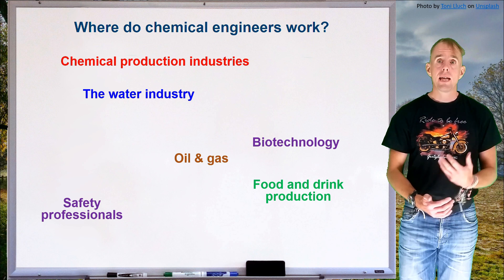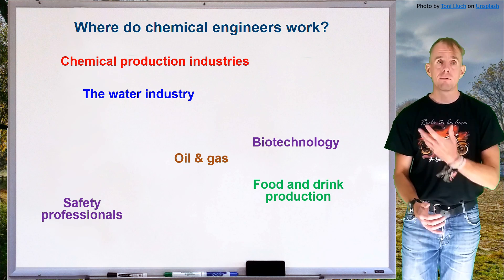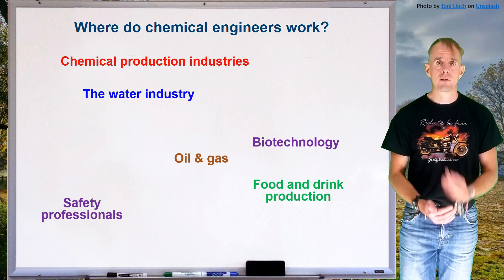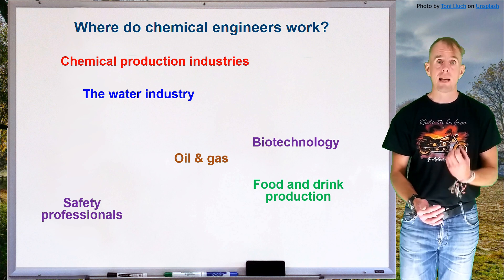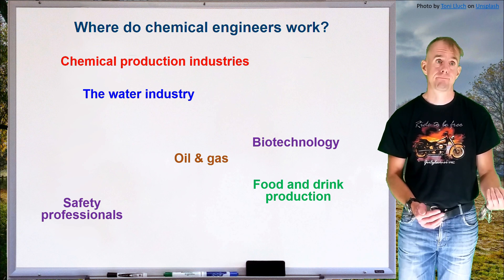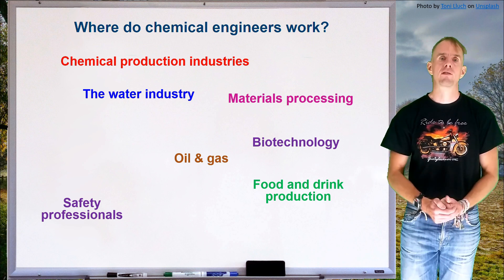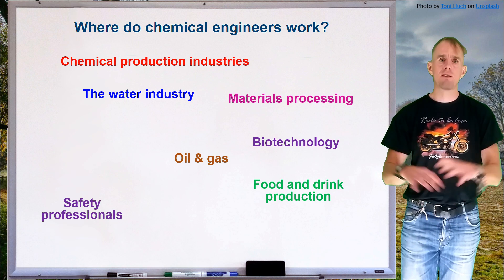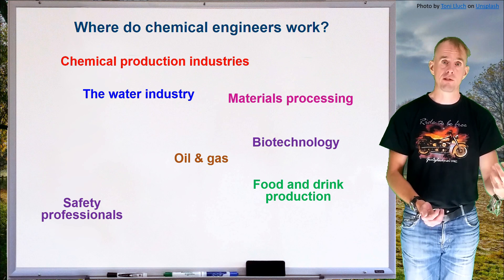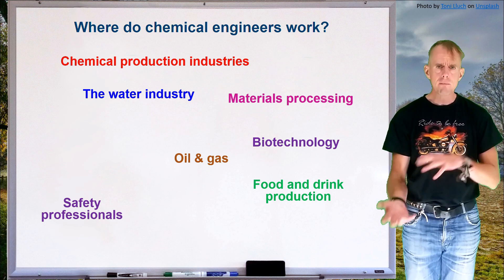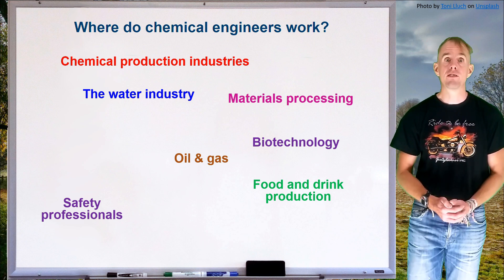Oil and gas is a traditional topic still with us today and will be for some decades yet. As well as providing energy, oil and gas provide the process industries with vital raw materials — so we can achieve net zero while still using oil or gas as a raw material to make products from, rather than burning it. Materials processing is also a very important part of chemical engineering. For example, titanium dioxide can be used as a photocatalyst in one physical form or as white paint pigment in a different physical form. Understanding how to process materials into their correct physical form ultimately tailors their characteristics for different products.